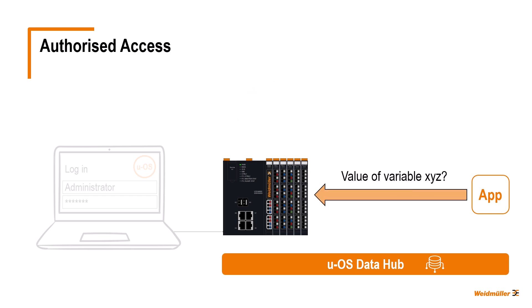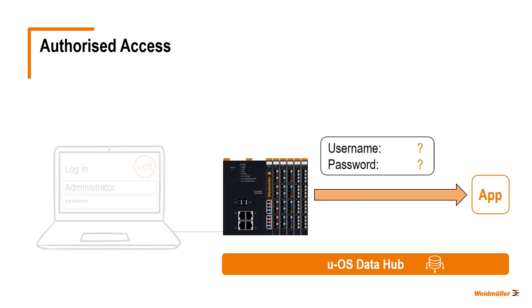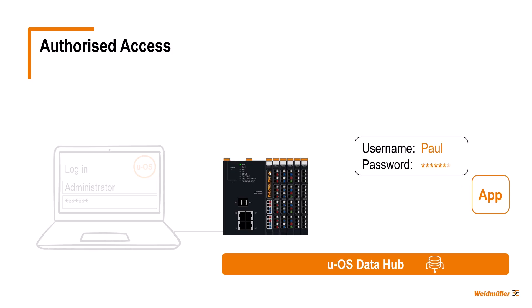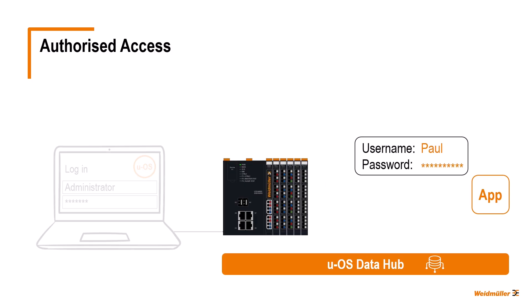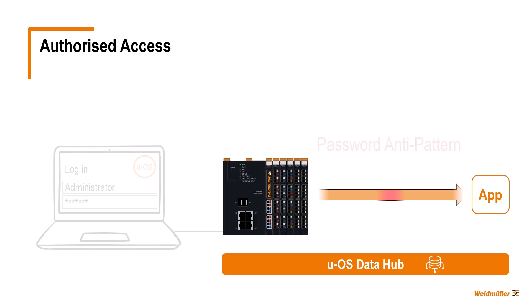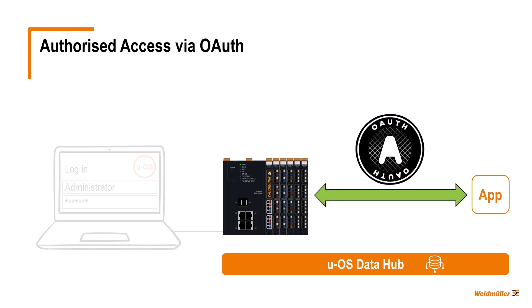However, we also want to avoid having to obtain the user's permission for authorization via sensitive usernames and passwords every time the API is used. This would be a process known as a password antipattern. For secure access without password antipattern, the OAuth protocol was developed. Access tokens are used to authorize devices, applications, and APIs instead of relying on login credentials. Passwords are not exchanged in this way and therefore remain securely protected.